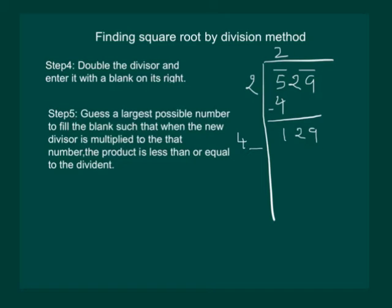Step 5 is that we have to guess the largest possible number to fill the blank, such that when the new divisor is multiplied to that number, the product is less than or equal to the dividend. Dividend is 129. If we take 1 in the blank and multiply by 1, this will give us 41 which is nowhere near to 129. So let us take 2 in the blank and multiply by 2. This will be 84.